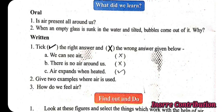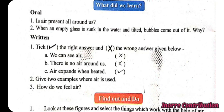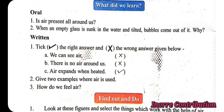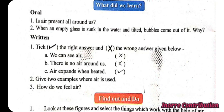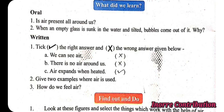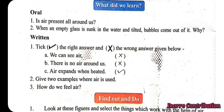First one: we can see air — wrong, cross. Second: there is no air around us — wrong, cross. Third: air expands when heated — true, tick.